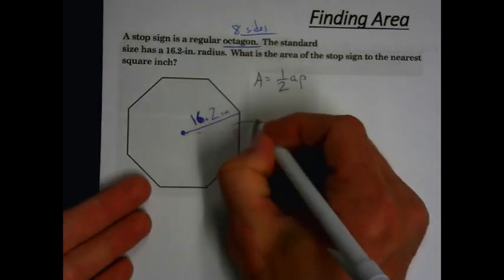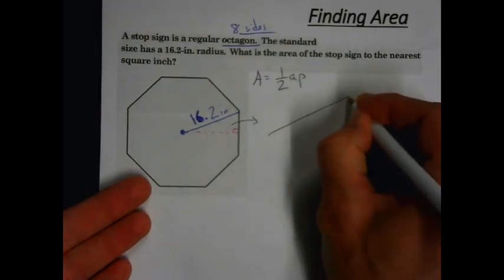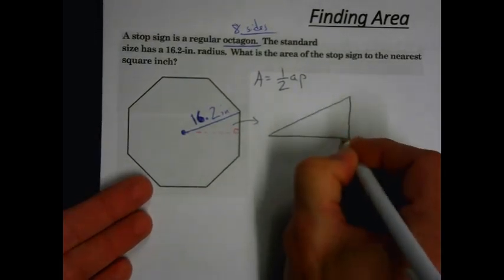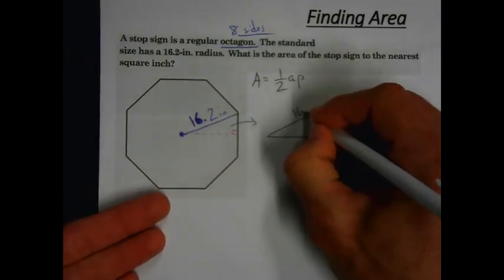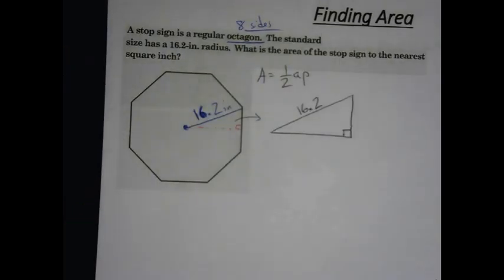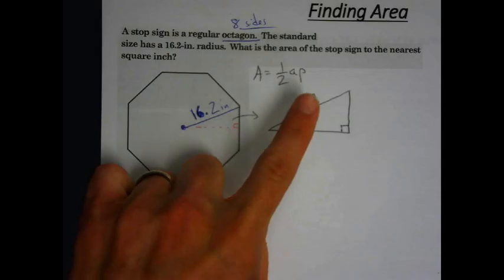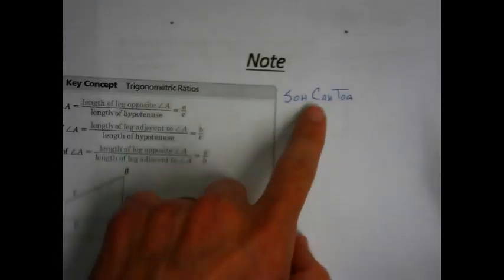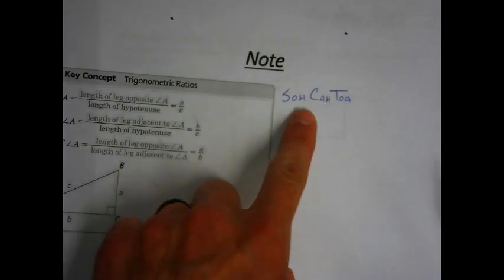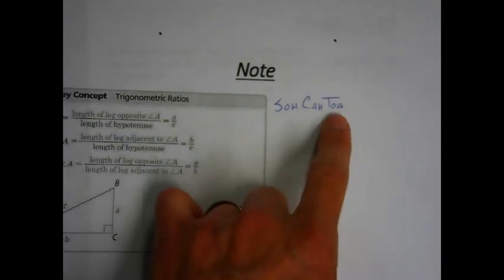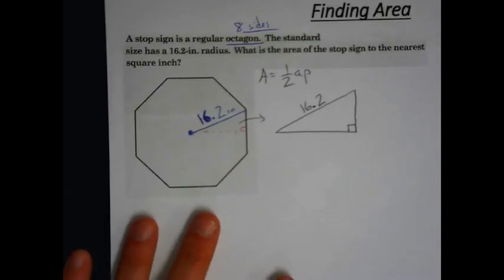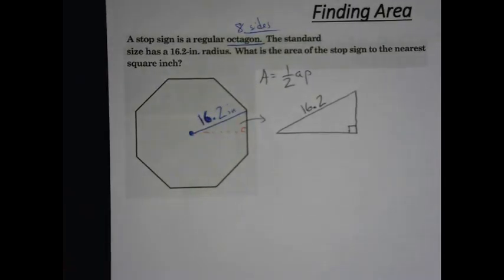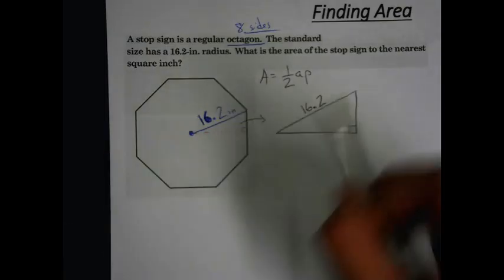The first thing we're going to do is make our pop-out triangle so we can work with something we can see. We know we have a 16.2-inch radius. In the pop-out triangle, the radius is our hypotenuse. So when we're working with trigonometry, we're dealing with a hypotenuse — either sine or cosine. In the two previous examples in the last video we worked with tangent, but here we might be working with something else. The only thing we're missing is our angle measure in the pop-out triangle.